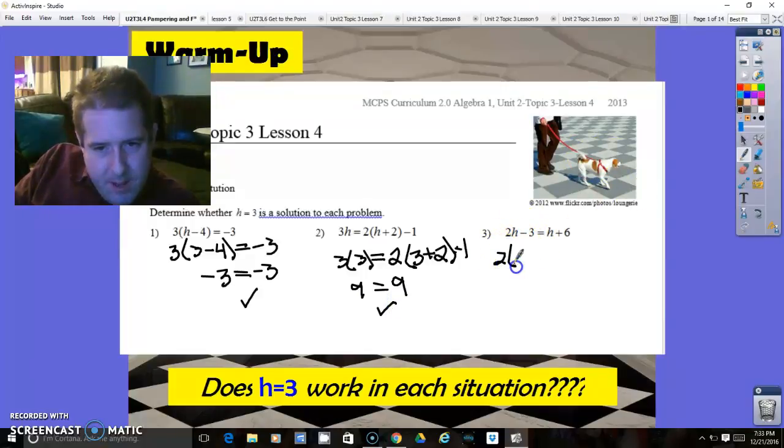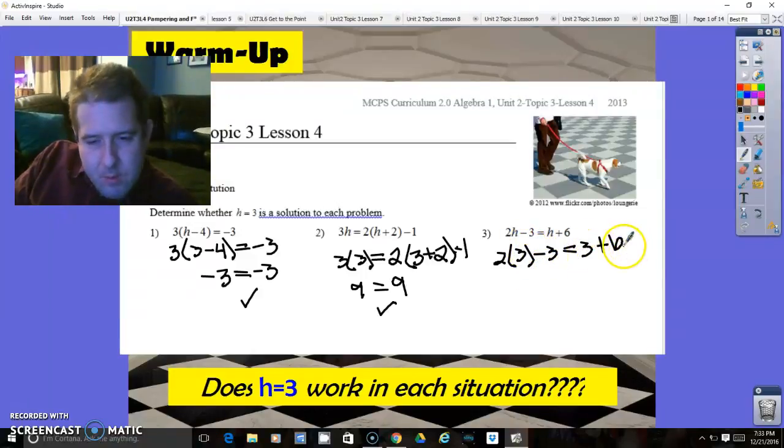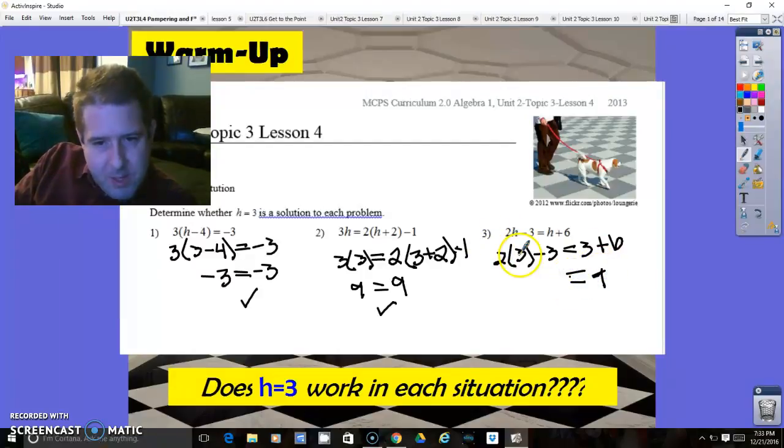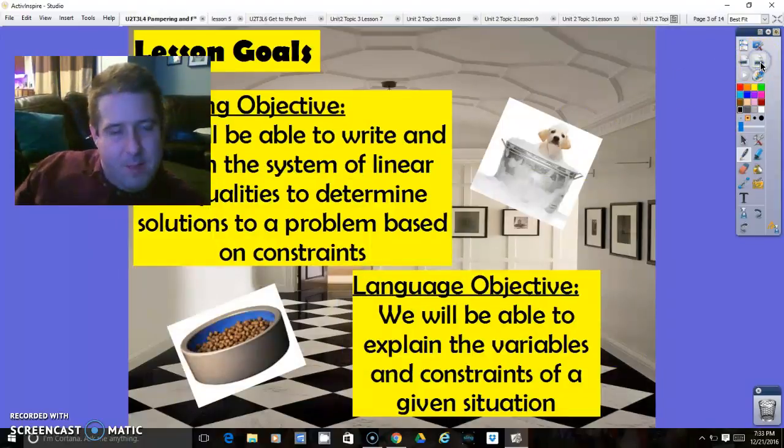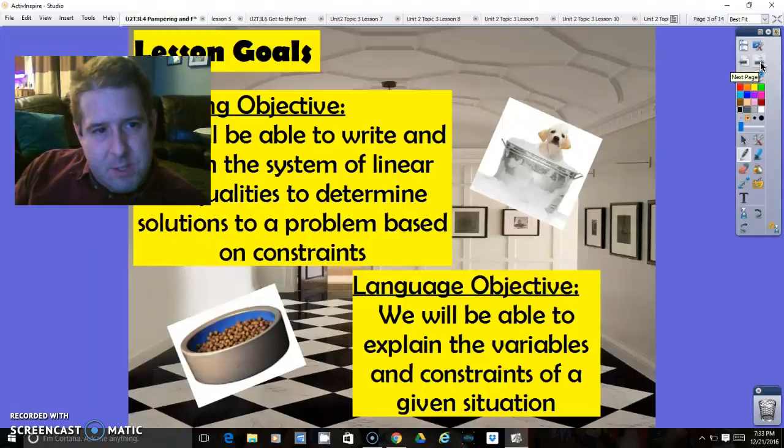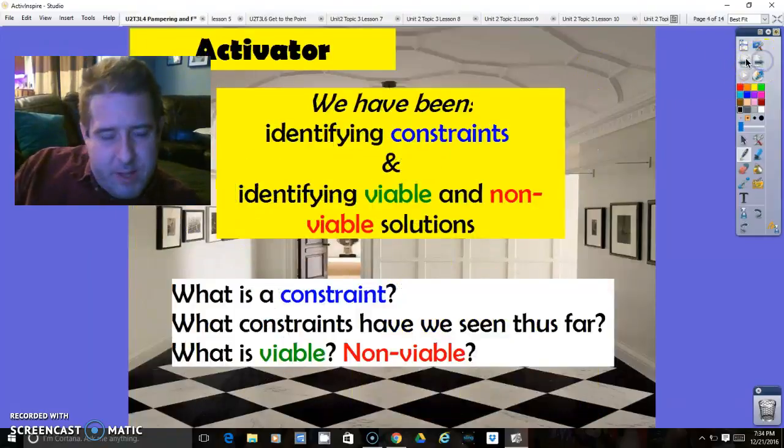And the last one, 2 times 3 minus 3 equals 3 plus 6. Well, 3 plus 6 is 9. And the other side, 2 times 3 is 6, 6 minus 3 is 3. That is not true. So it looks like the first two were true and the last one was not. Substitution, which is something we're going to do in this lesson as well, which is substituting to find the x and y intercepts in standard form.